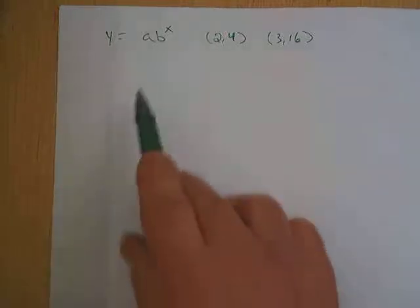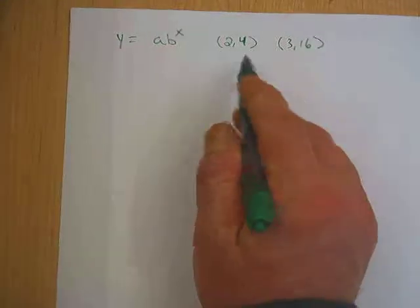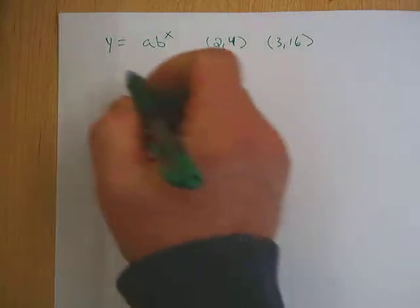Alright, this is another example of how to write an exponential equation given two points. Okay, so the first thing we need to do is pick one of the points, doesn't matter which one, and substitute in for x and y.